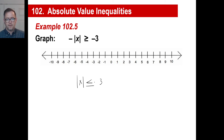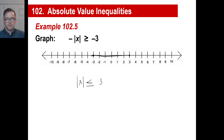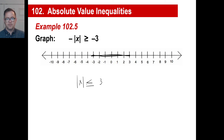We're going to do exactly the same thing on these absolute value inequalities. We're just going to take the entire thing and divide by negative one. If we do that, we'll get just a normal absolute value of x. We will get a three on the right side, and instead of a greater than or equal to, we'll get a less than or equal to three. And that's it. So let's graph this: what numbers give you an absolute value equal to or less than three? The answer is anywhere from negative three to positive three. Anything outside, like six — the absolute value of six is six, which is not less than or equal to three. Negative ten gives absolute value ten, which is also not less than or equal to three.